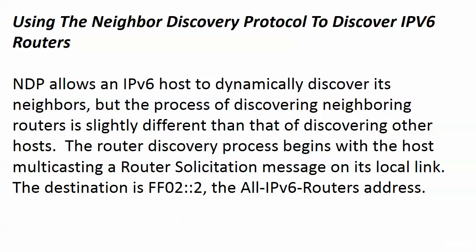The router discovery process begins with the host sending out a Router Solicitation message — an RS — onto its local link. The destination is a multicast address; it's not unicast to one particular host, and it's not a broadcast since we don't have those in IPv6. This multicast destination is FF02::2, which is the all-IPv6-routers address.